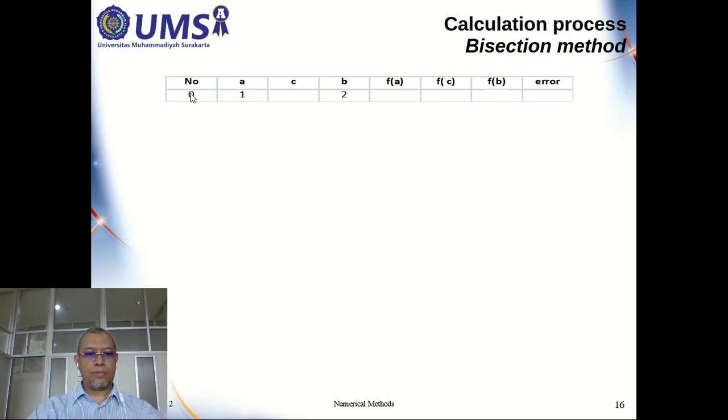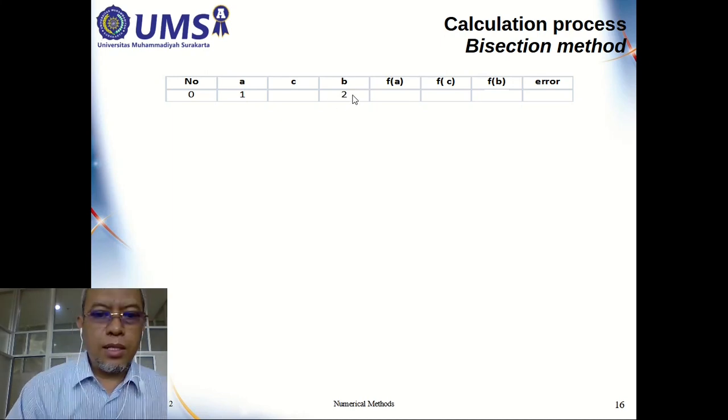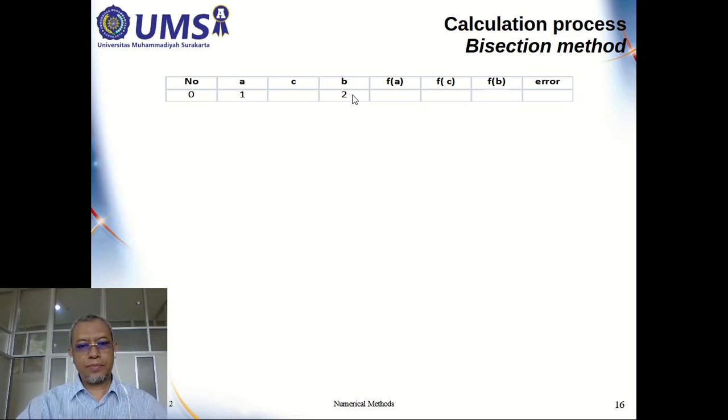So because you are already required to find in between 1 and 2, then you have to follow 1 and 2. But if you are not required and you are free to use any numbers, then you can use any numbers. But you have to make sure that the multiplication of the two values are negative.